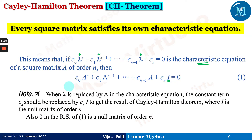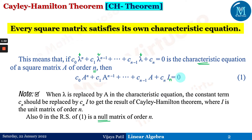What we have to note is that when λ is replaced by A in the characteristic equation, the constant term cₙ should be replaced by cₙ times I to get the result of the Cayley-Hamilton theorem, where I is the identity matrix of order n. Also, 0 on the right-hand side is the null matrix, or zero matrix, of order n — the same order as matrix A.